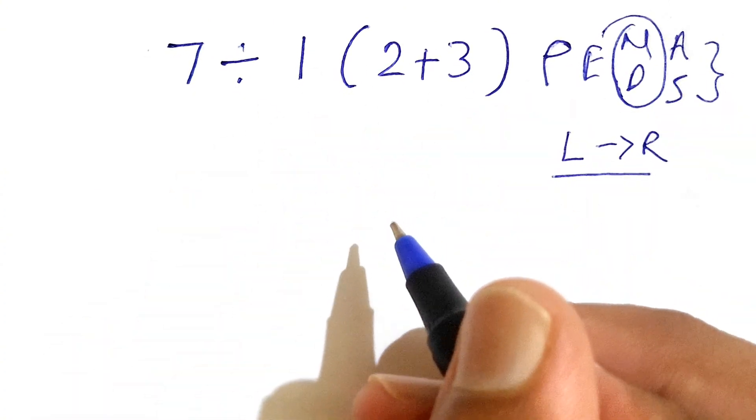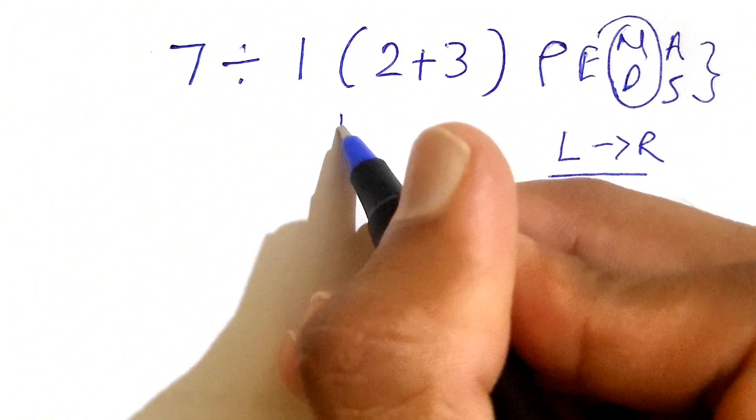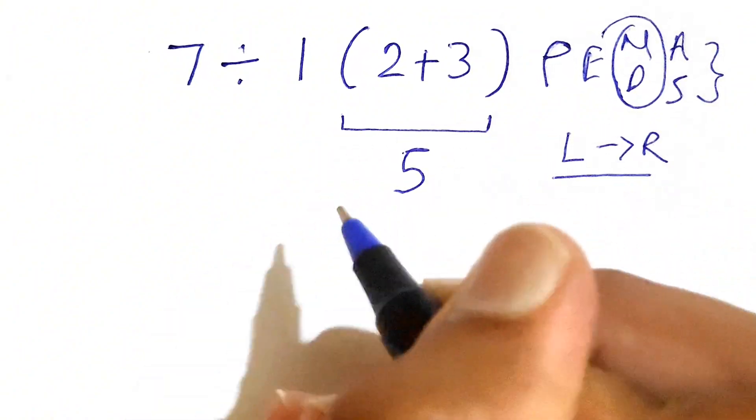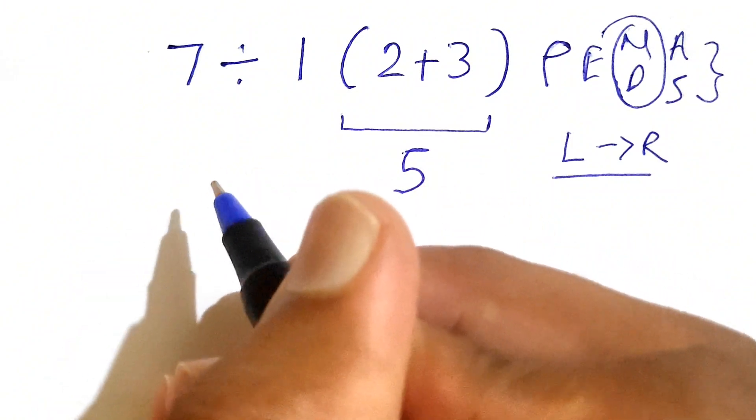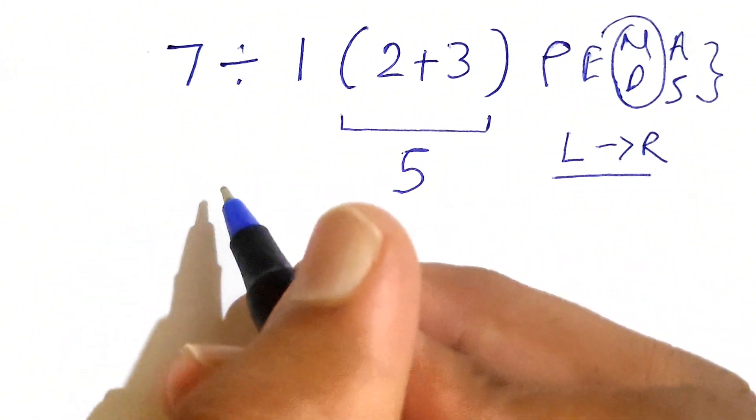Let's try solving this. First, we need to solve the parentheses, that is 2 plus 3, which gives us 5. Now we need to rewrite the expression again to make it look easier.